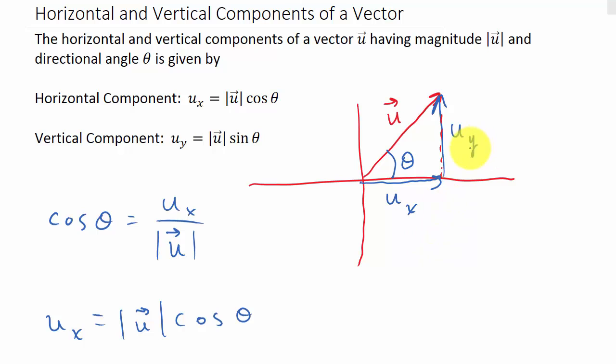And then for the vertical component, well we know that sine theta is opposite over hypotenuse. So that would be the opposite over, and then the hypotenuse, the magnitude of u. And then if we solve for u_y, well this multiplies when it comes across, that's the magnitude of u times sine theta.